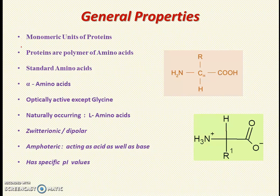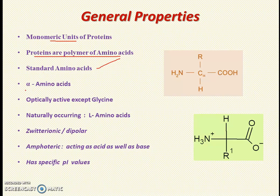These are the basic points you need to know before we go into detail. Amino acids are single units of proteins — proteins when broken down give amino acids, or we can define proteins as polymers of amino acids. There are 20 standard amino acids, and amino acids are alpha because they are attached to the alpha carbon.